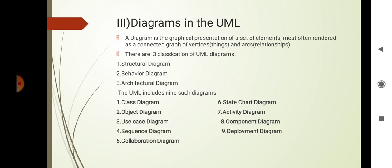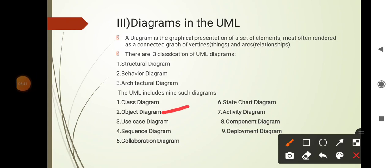UML includes nine diagrams. First is the class diagram: a structural diagram that shows a set of classes, interfaces, collaborations and their relationships. Second is the object diagram: a structural diagram that shows a set of objects and their relationships. Third is the use case diagram: a behavioral diagram that shows a set of use cases and actors and their relationships. Fourth is the sequence diagram: a behavioral diagram that shows an interaction emphasizing the time ordering of messages.